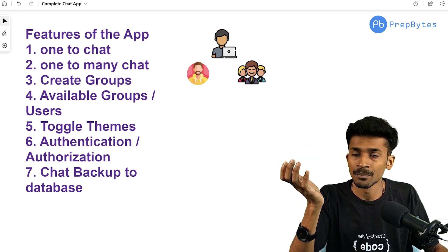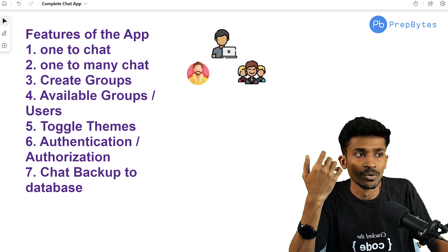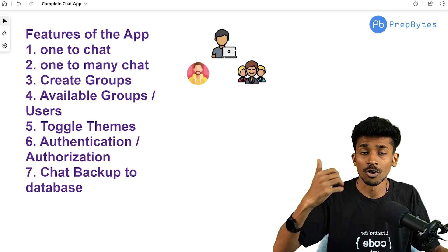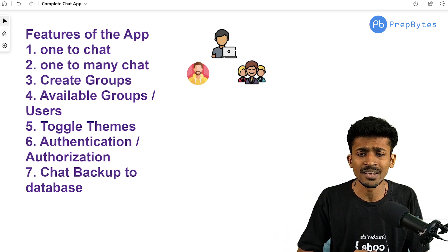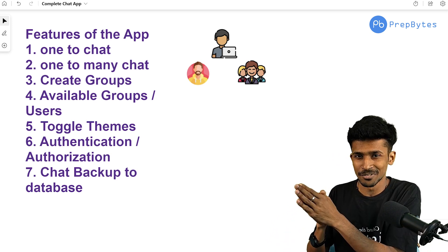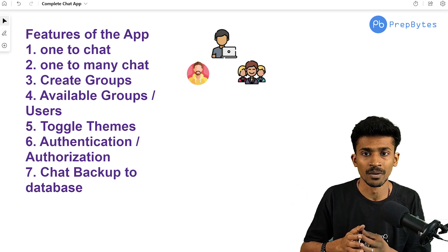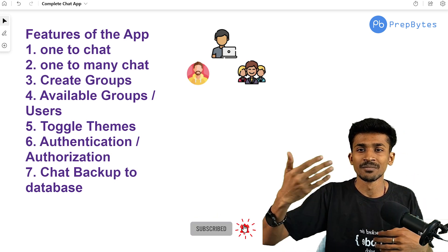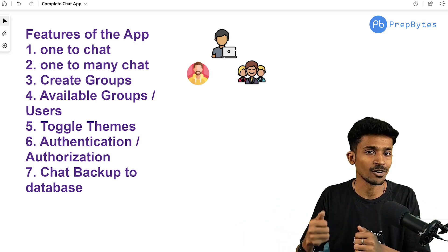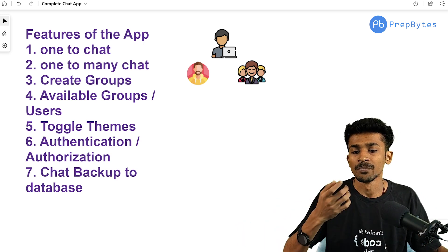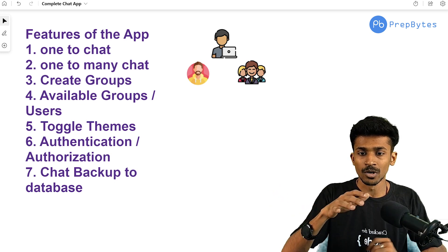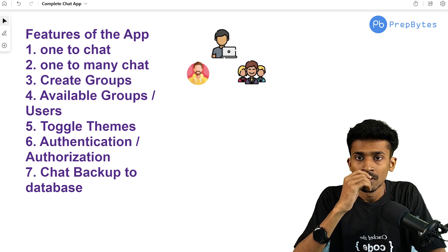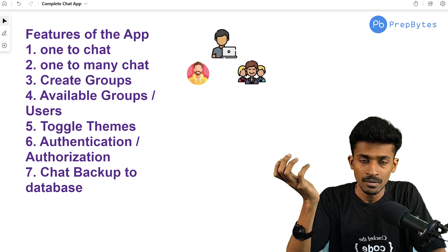All your chats and everything you've done will be stored in a database so you can continue your conversation the next time you start the application. Apart from these core features, you can add additional ones like sending files or making calls. Due to time constraints, these seven features are what we'll mainly focus on, with possible add-on videos later for file sending and calling.